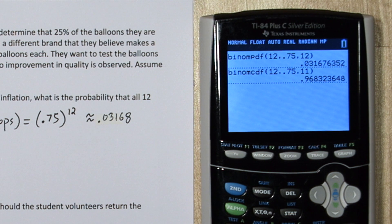or 11 balloons inflating correctly. So it actually represents everything we're not trying to calculate. It's the complement. If we do 1 minus what we just got, there's our probability again.